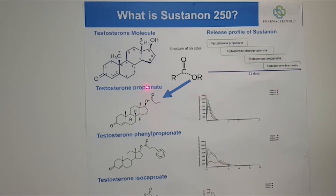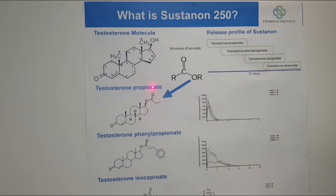Looking at the first ester, testosterone propionate — this is our testosterone molecule and we've added this ester side chain. Propionate: meth, eth, prop — that means three carbon atoms. That's the side chain here, and this is the release profile. Probably within 48 hours that's out of the system.